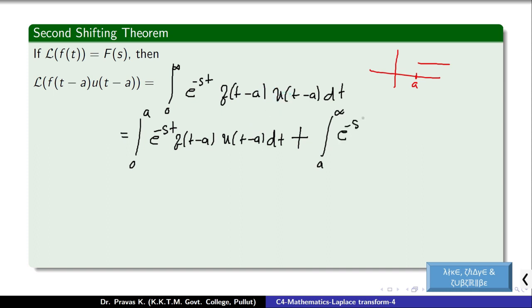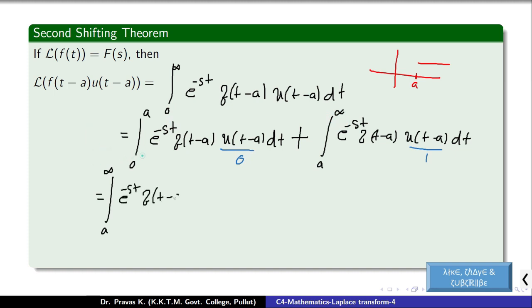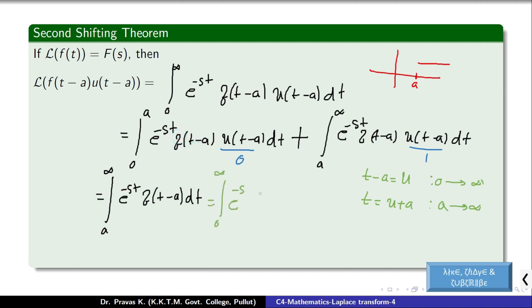The first part where u(t-a) equals 0 vanishes, and the second part gives integration from a to infinity of e raised to minus st into f(t-a) dt. Now we apply a change of variable: let u equal t minus a, so when t equals a, u equals 0, and as t goes to infinity, u goes to infinity. Then dt equals du and the integral becomes e raised to minus s(u+a) into f(u) du from 0 to infinity.